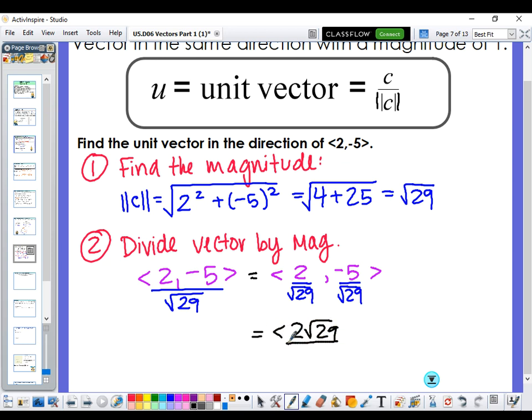So we're going to rationalize for our final answer. 2 square root of 29 over 29 and negative 5 square root of 29 over 29. That would be the unit vector. If I were to find the magnitude now of that final answer, the magnitude would be 1.